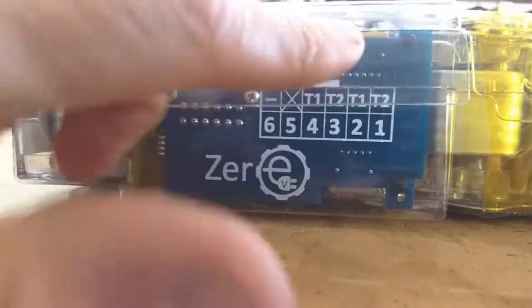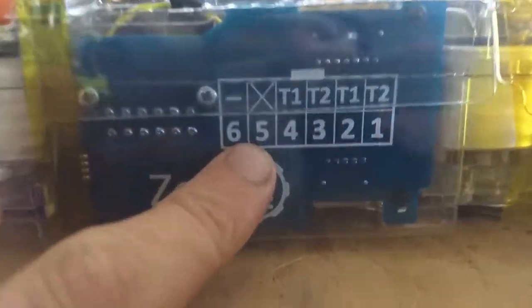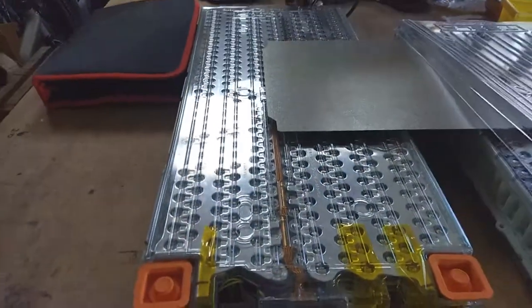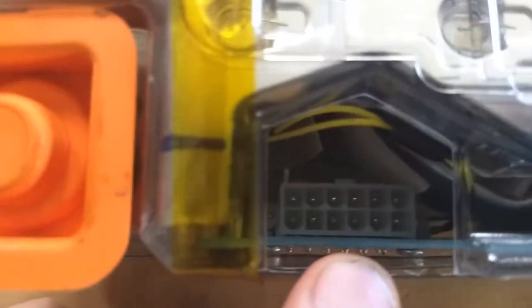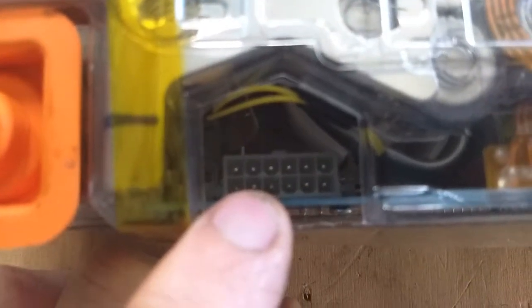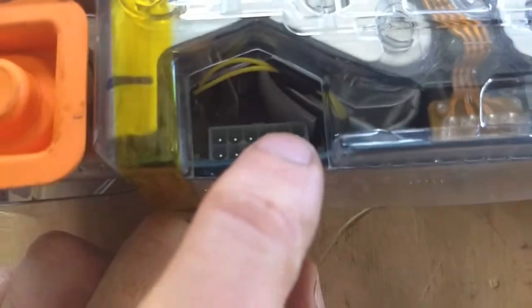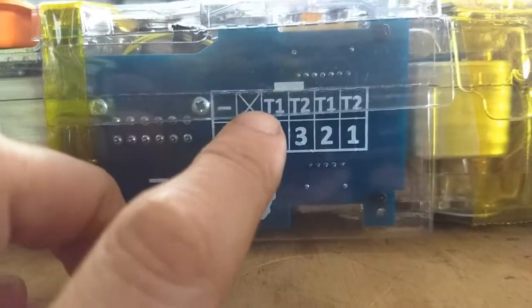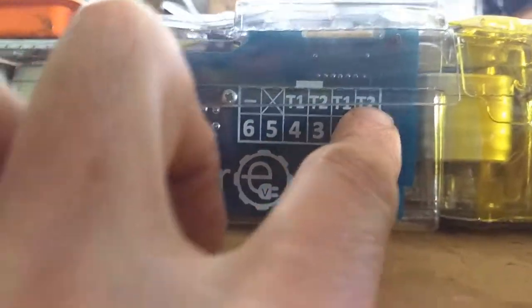And that gives you, as it's shown here, the negative and then the positive for each of the six cells in this 6S module on the inner of these Molex pins. And then the outer, or the other row, is ground, nothing, and then the two temperature sensors.